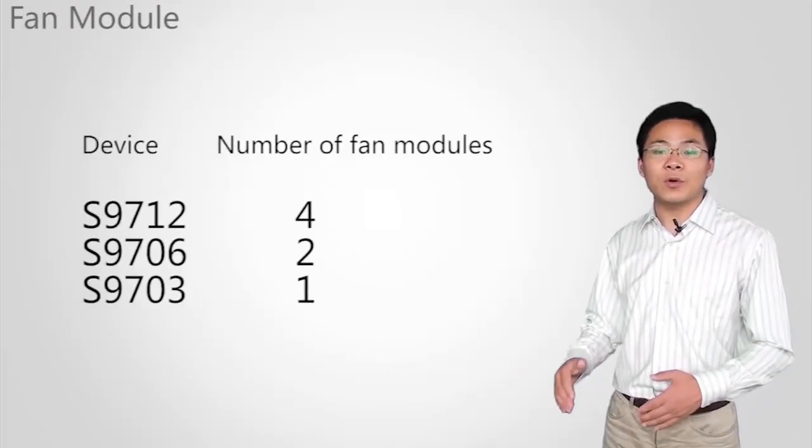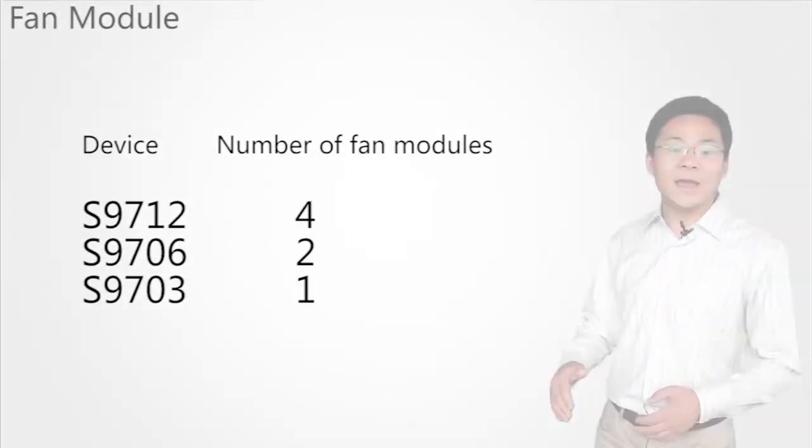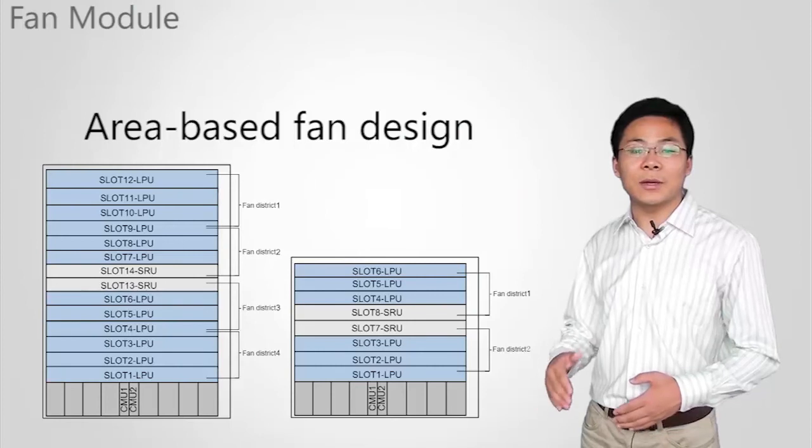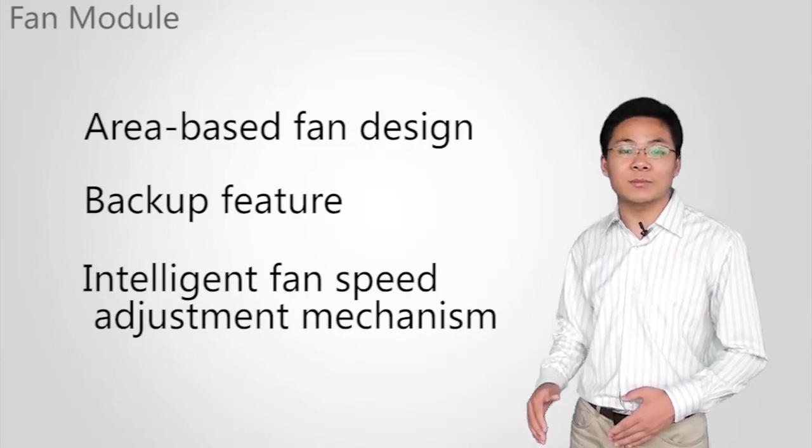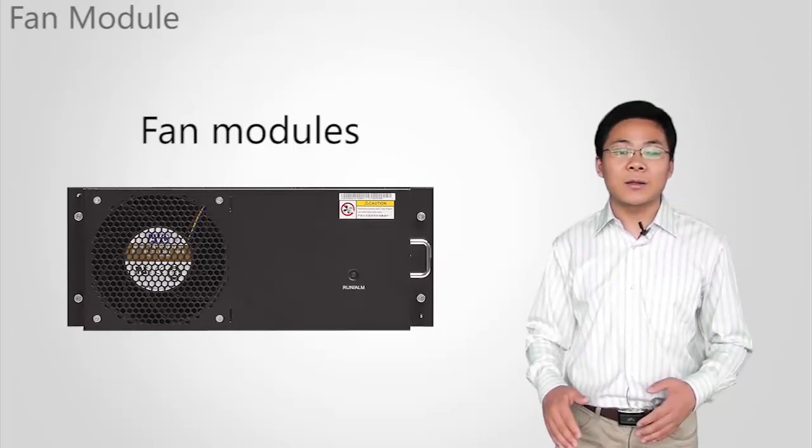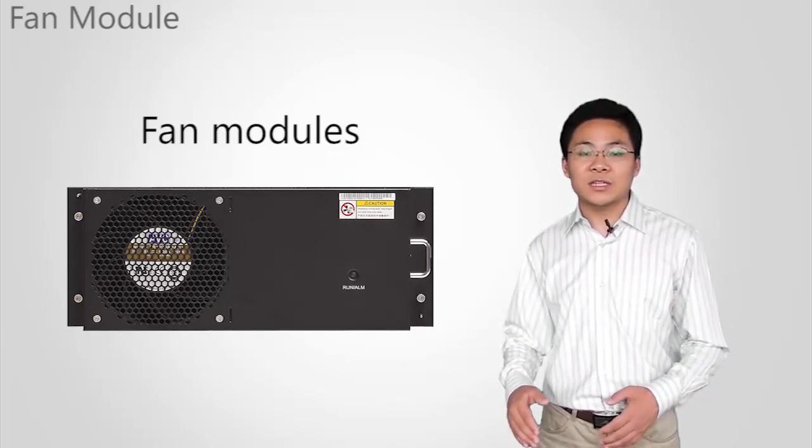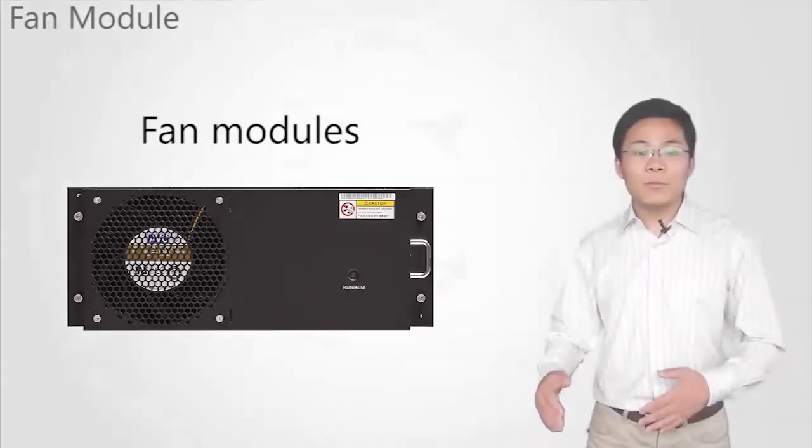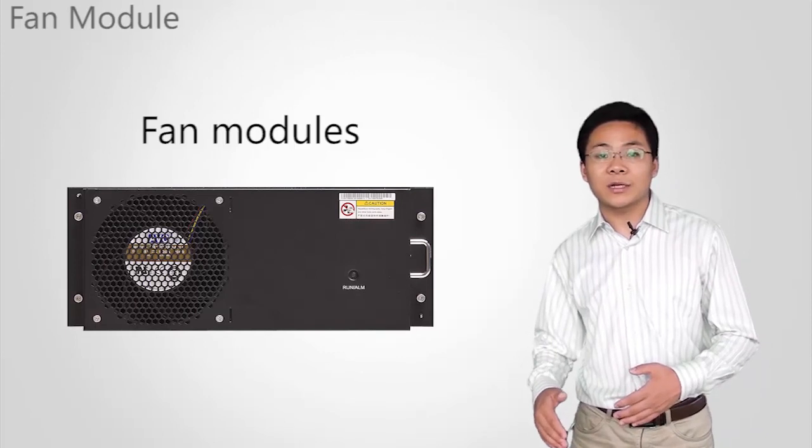S9700 uses fan modules that are hot swappable. The number of fans varies depending on the switch model. Fans draw air into devices for heat dissipation. S9700 uses an area-based fan design with a backup feature and an intelligent fan speed adjustment mechanism. Each fan is responsible for heat dissipation within a certain area. The switch monitors the temperature of key components throughout the system and adjusts the fan speed based on the device temperature. This helps to ensure stable operation of both fans and devices. The fan modules make the system more reliable and the speed adjustment mechanism reduces power consumption and noise.